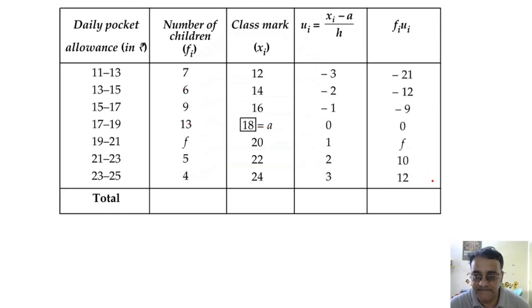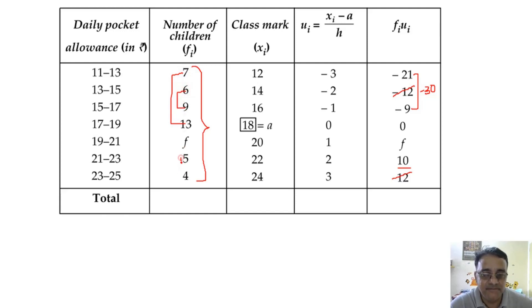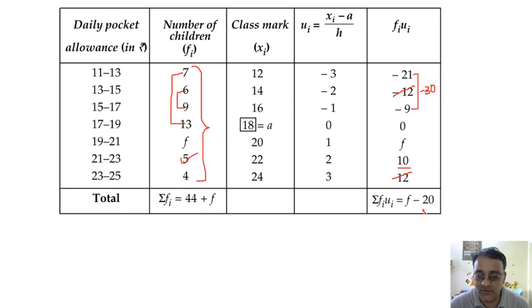Now simplifying these numbers: the −2 and +2 cancel, and combining −30 and +10 we get f minus 20 for summation fu. For the total frequency, adding all: 20, 15 = 35, 40, 44. So summation f is 44 plus f. These two results — summation fu = f − 20 and summation f = 44 + f — are now clear.